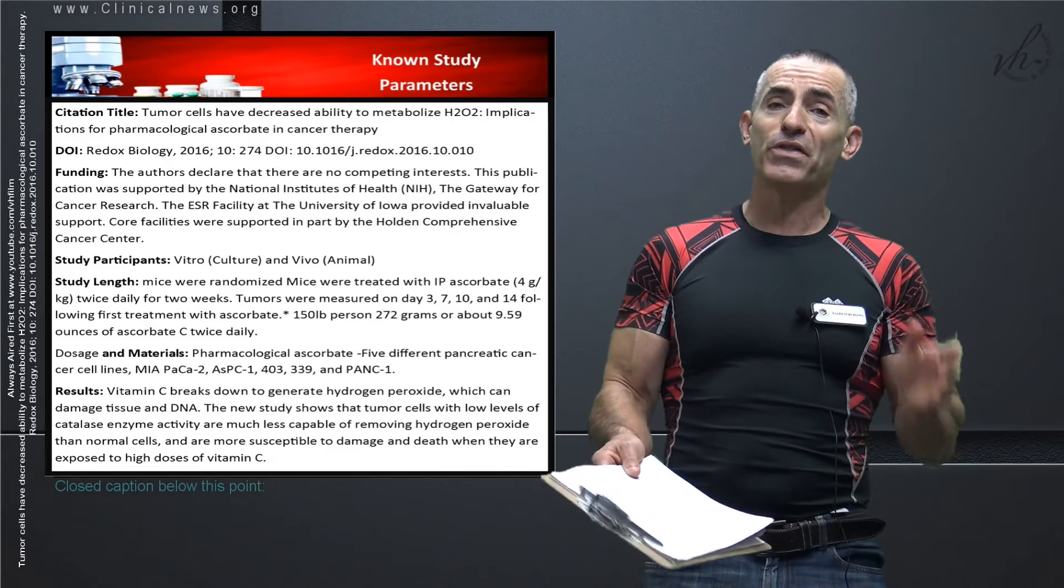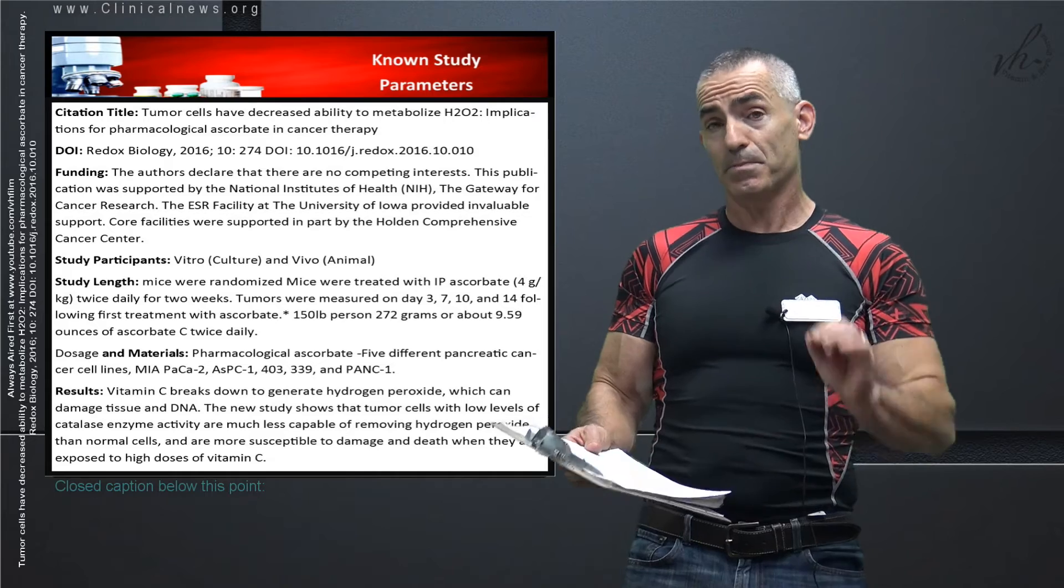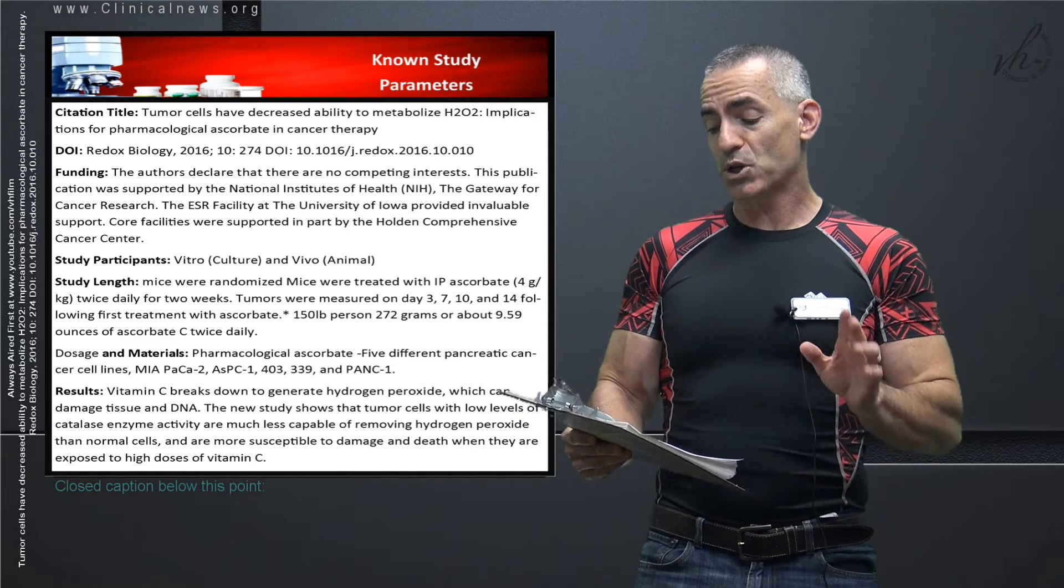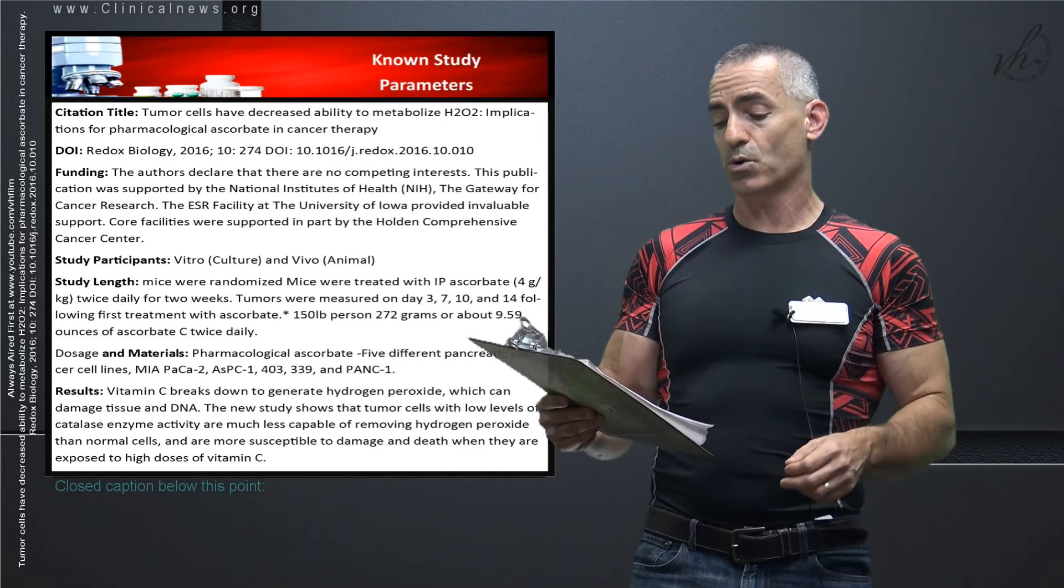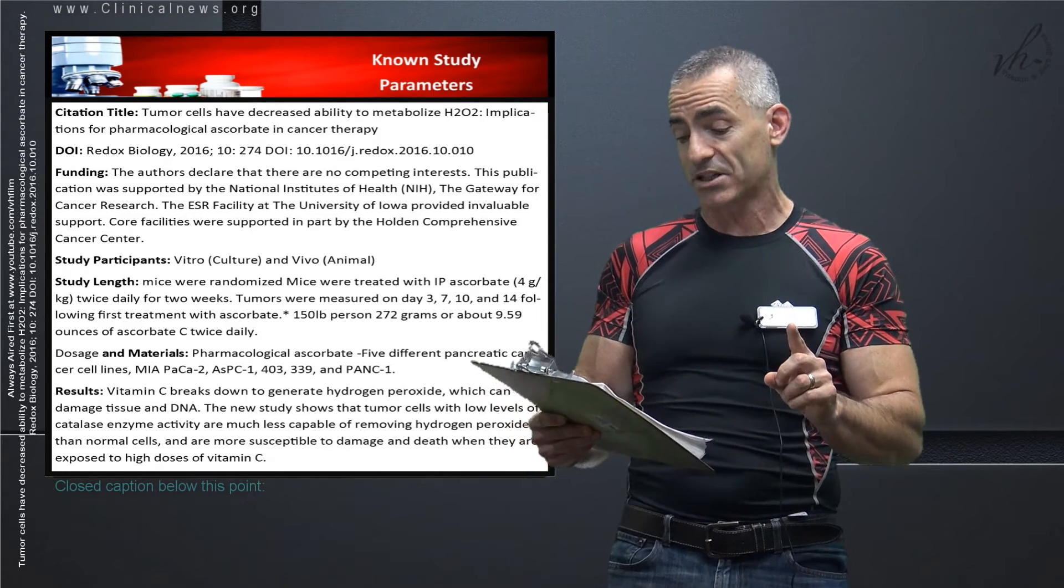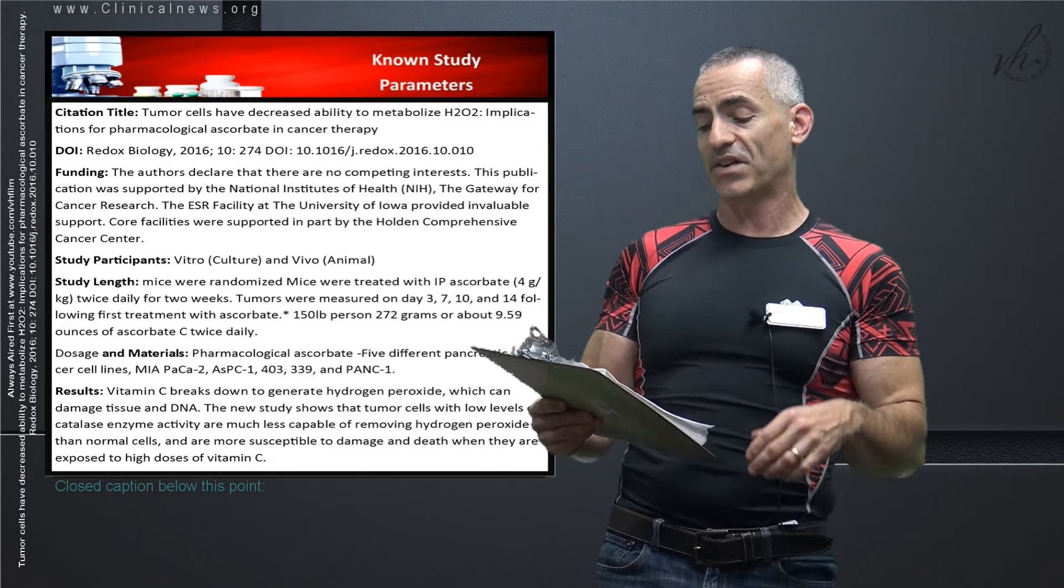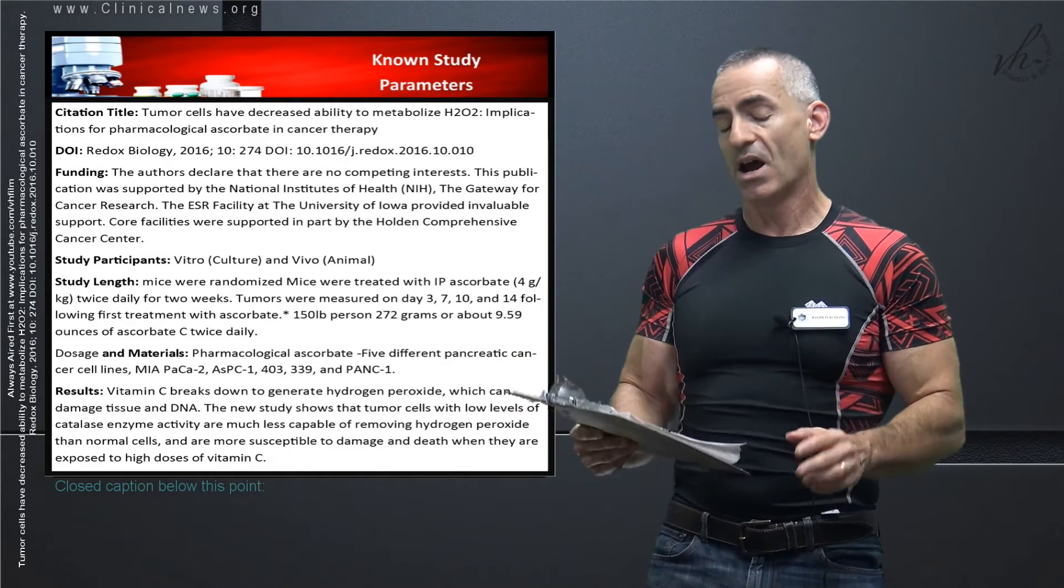Study length, the mice were randomized which is important also. The mice were treated with IP ascorbate, intravenous ascorbate at 4 grams a kilogram twice daily for two weeks. Tumors were measured on day 3, 7, 10 and 14 following the first treatment with ascorbate.